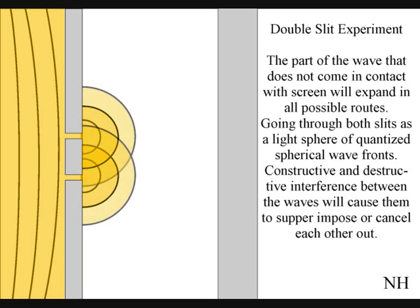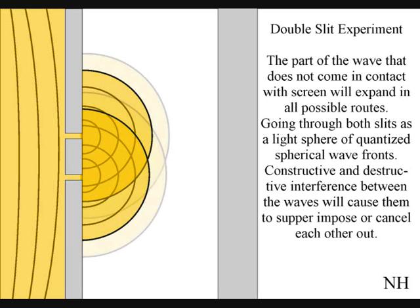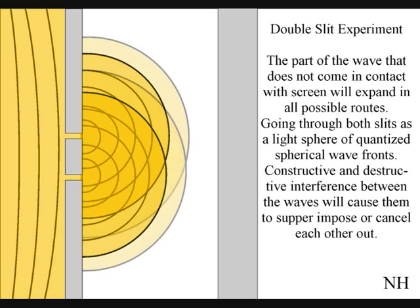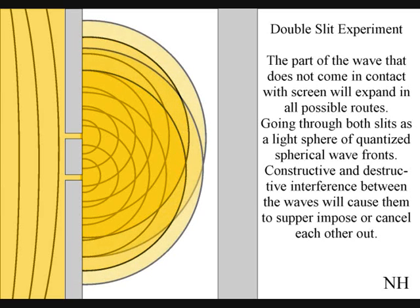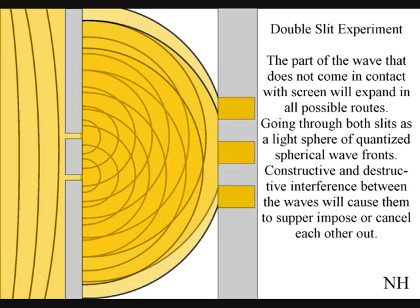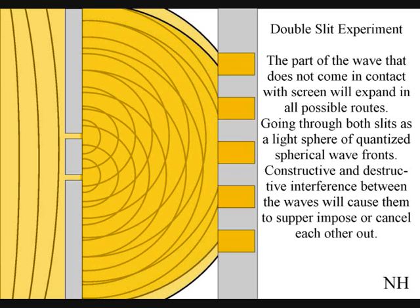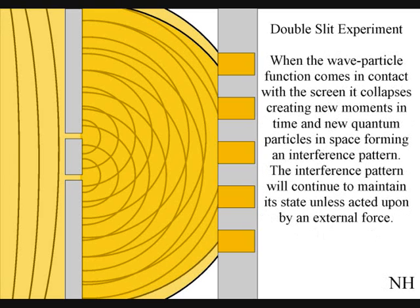The part of the wave that does not come in contact with the screen will expand in all possible routes, going through both slits as two light spheres of quantized wave-fronts. Constructive and destructive interference between the waves will cause them to superimpose, or cancel each other out. When this wave-particle function comes in contact with the screen, it will collapse, creating moments of time and quantum particles in the shape of an interference pattern.